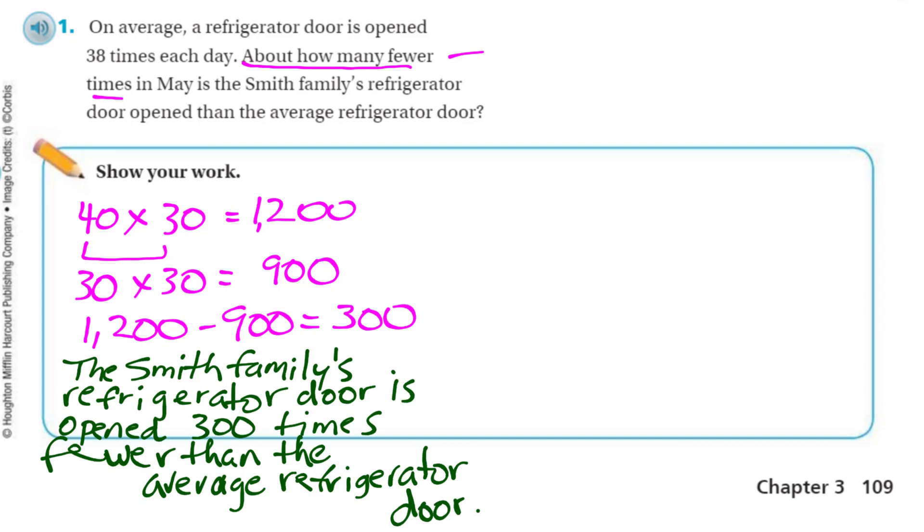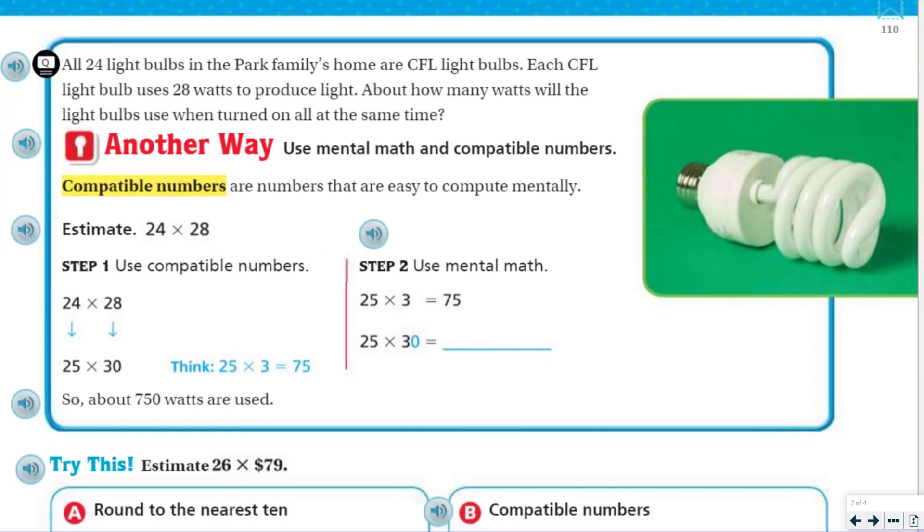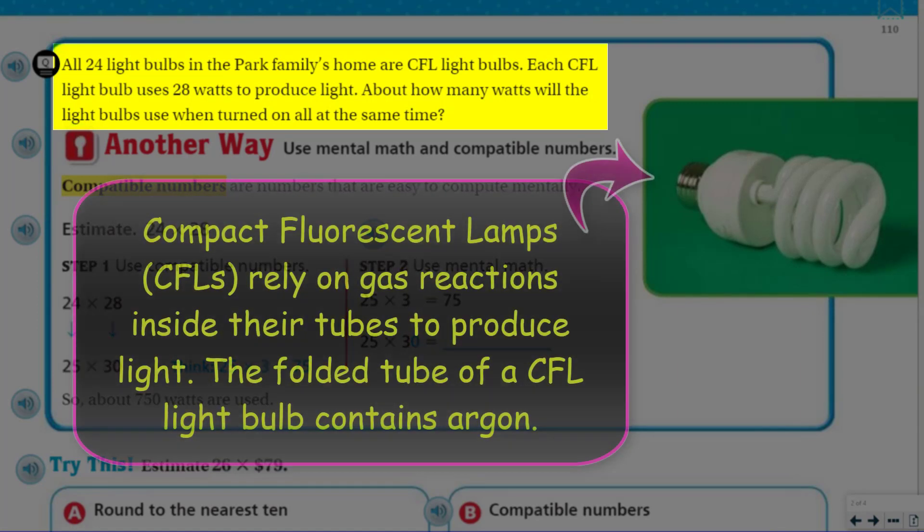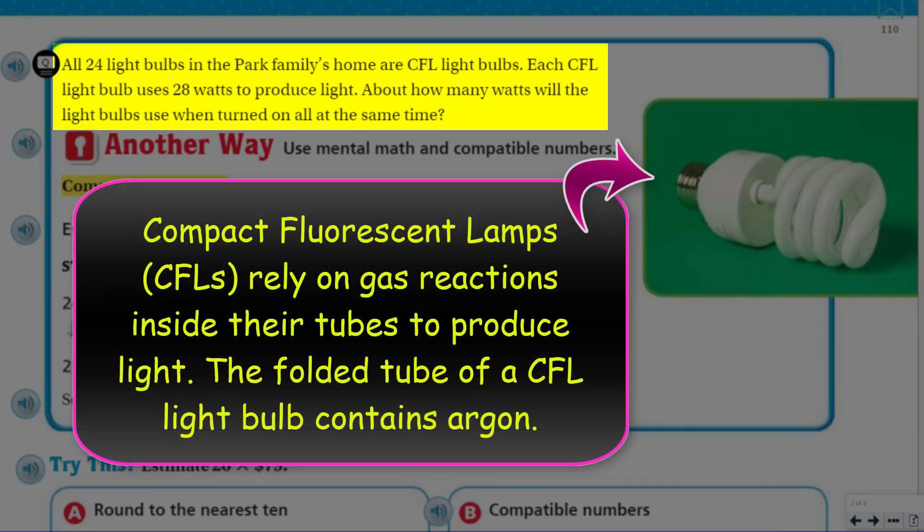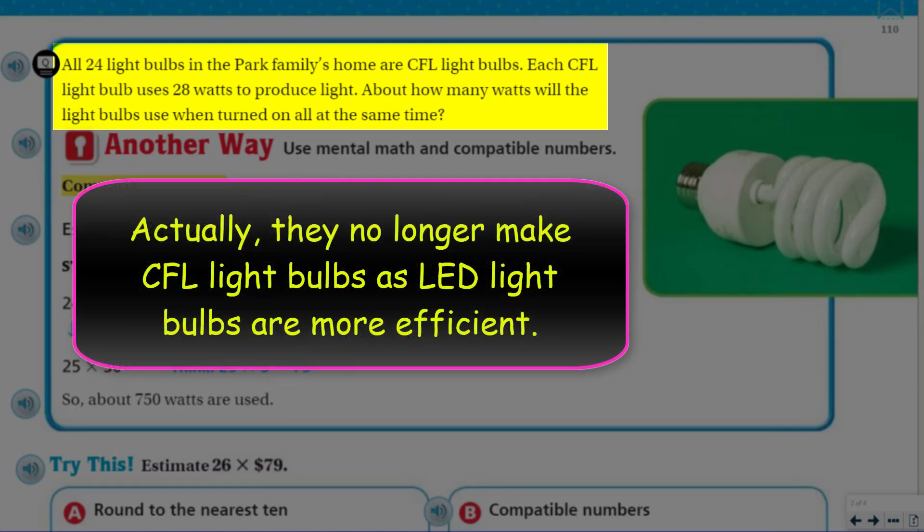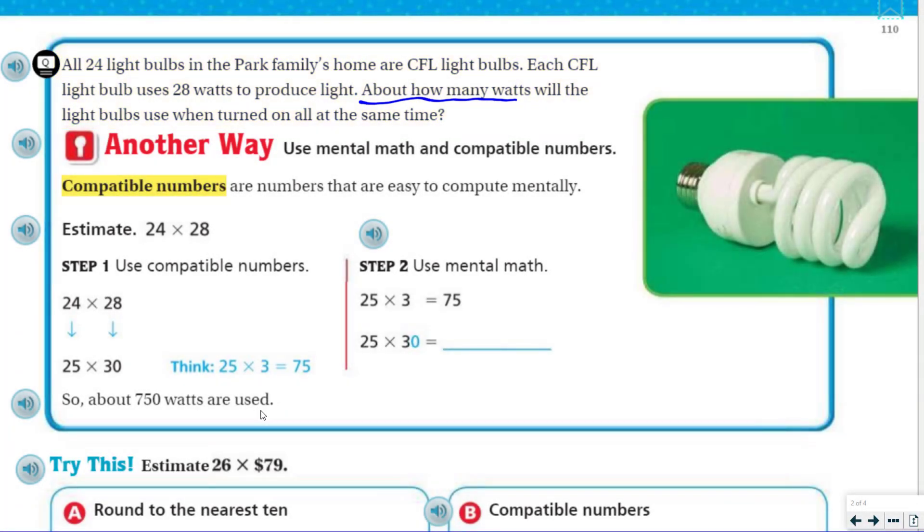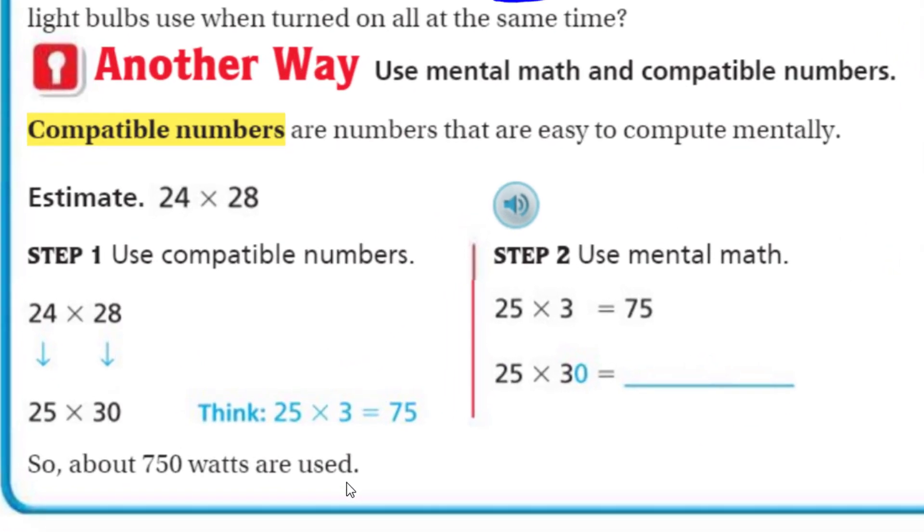Coming to page two. Now, it says here, all 24 light bulbs in the Park family's home are CFL light bulbs. They must be really important light bulbs. I'm not quite sure what CFL are. They look like LED light bulbs. Those are pretty cool light bulbs. Each CFL light bulb uses 28 watts to produce light. It says about how many. About how many watts will the light bulbs use when turned on all at the same time? I'm definitely looking for an estimate. It says use mental math and compatible numbers.